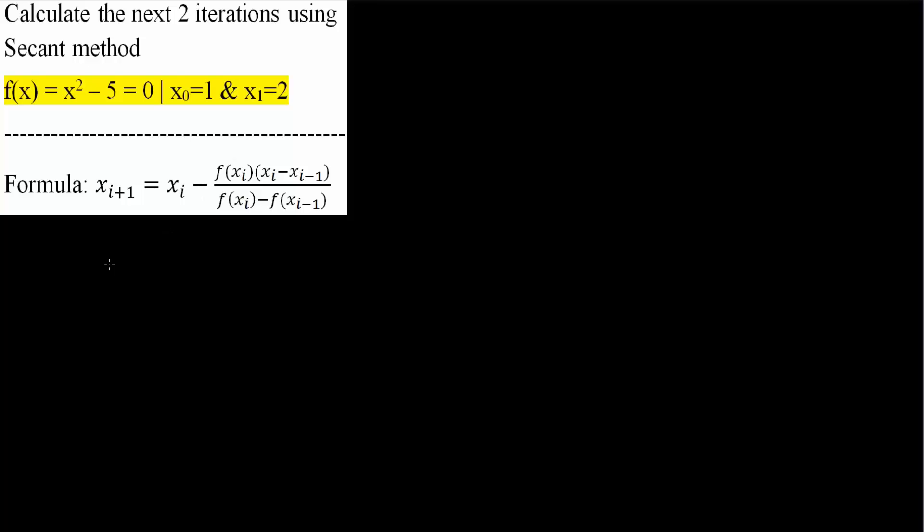We can get x2 and then x3 and so forth. So x2, meaning 1 plus 1, is equal to x1 minus f(x1) times (x1 - x0) divided by f(x1) - f(x0). This is what we have based on this formula, and now we will replace this given information with our actual numbers.